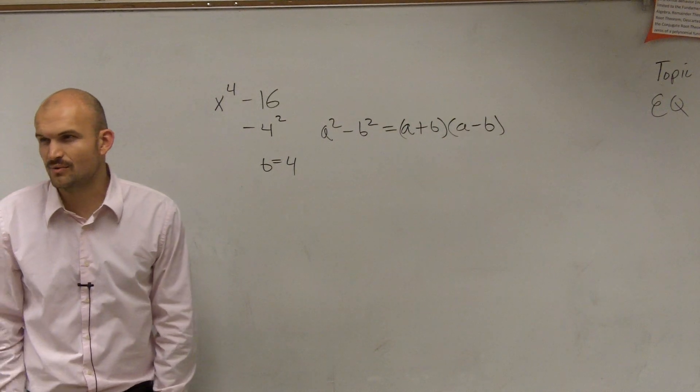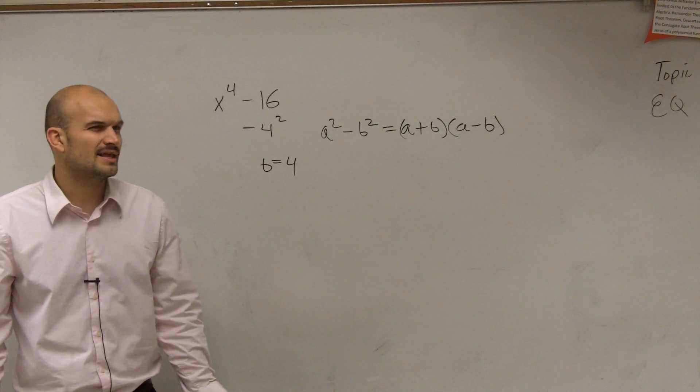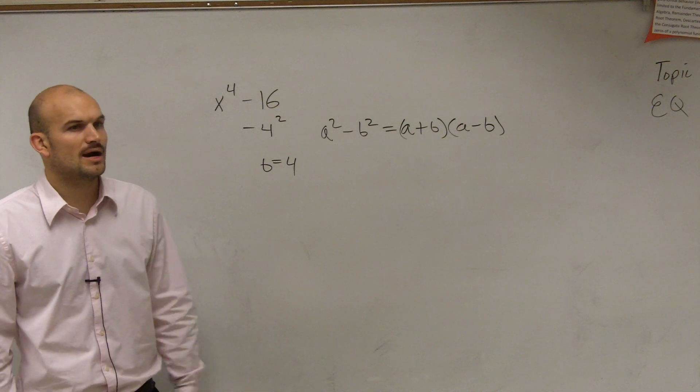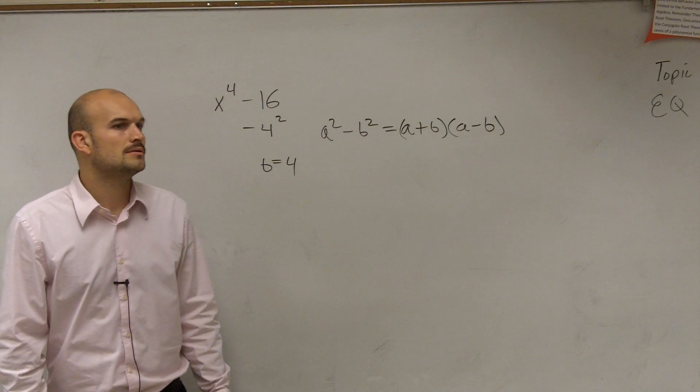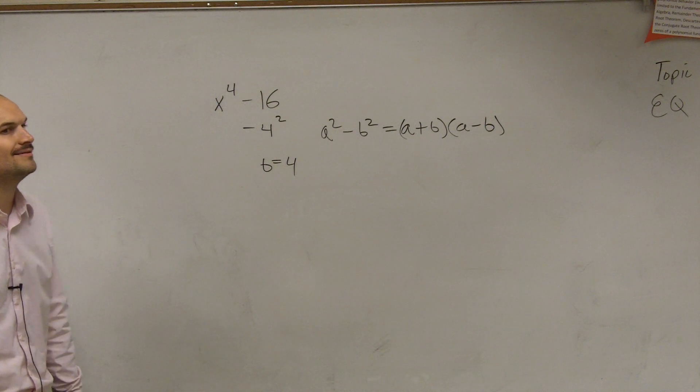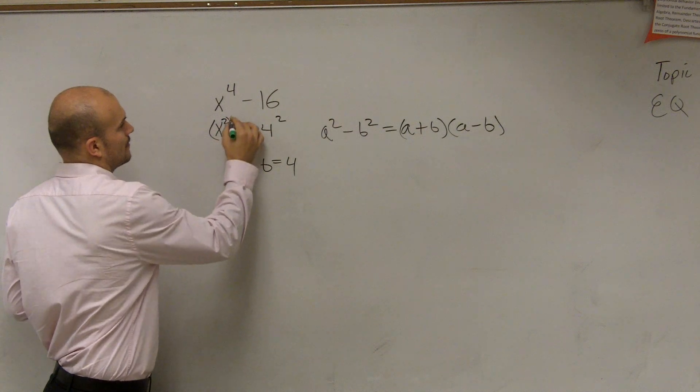But is x to the fourth a squared number? What would you say then, Adara? If it is a squared number, then how can you rewrite it so it'd look more like a square number? x squared squared, right?